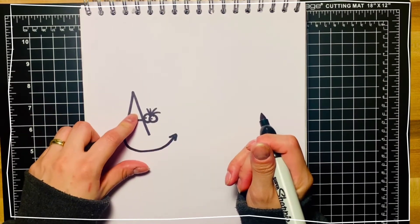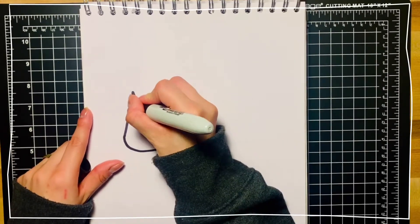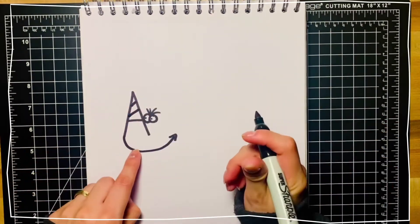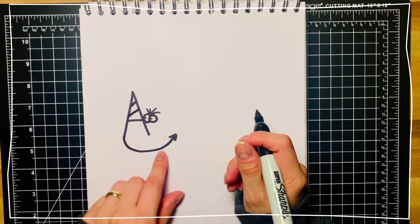And right here, where it says horn, we're going to draw some lines in there. There we go. Next, we're going to give him some teeth.